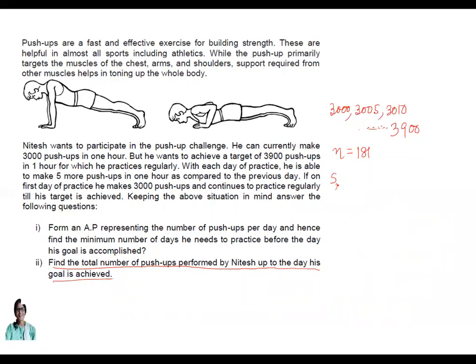So we will use the formula. S_n we know, n by 2 within bracket first term plus your last term. So S_181 is equal to 181 by 2, times (3000 plus 3900). So easy to calculate, 181 by 2, times 6900.